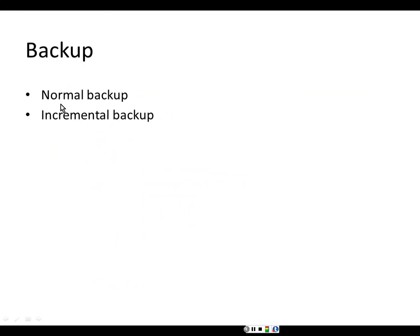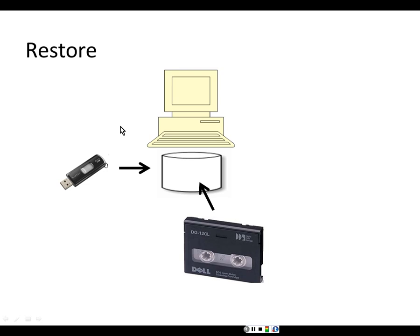A normal backup backs up all of your data. An incremental backup only backs up data which has been modified since the last full backup, so it is much faster than a normal backup. A restore is where you copy the data back to the hard disk from the tape drive or USB drive.